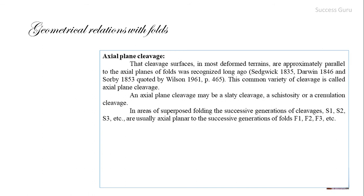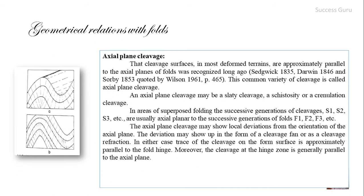If an area undergoes superimposed deformation in multiple cycles — say cycles 1, 2, and 3 — there will be folds F1, F2, and F3, and corresponding cleavages S1, S2, and S3. The most recently formed cleavage will appear as a straight plane, while previously formed cleavages may have been deformed by subsequent folding.